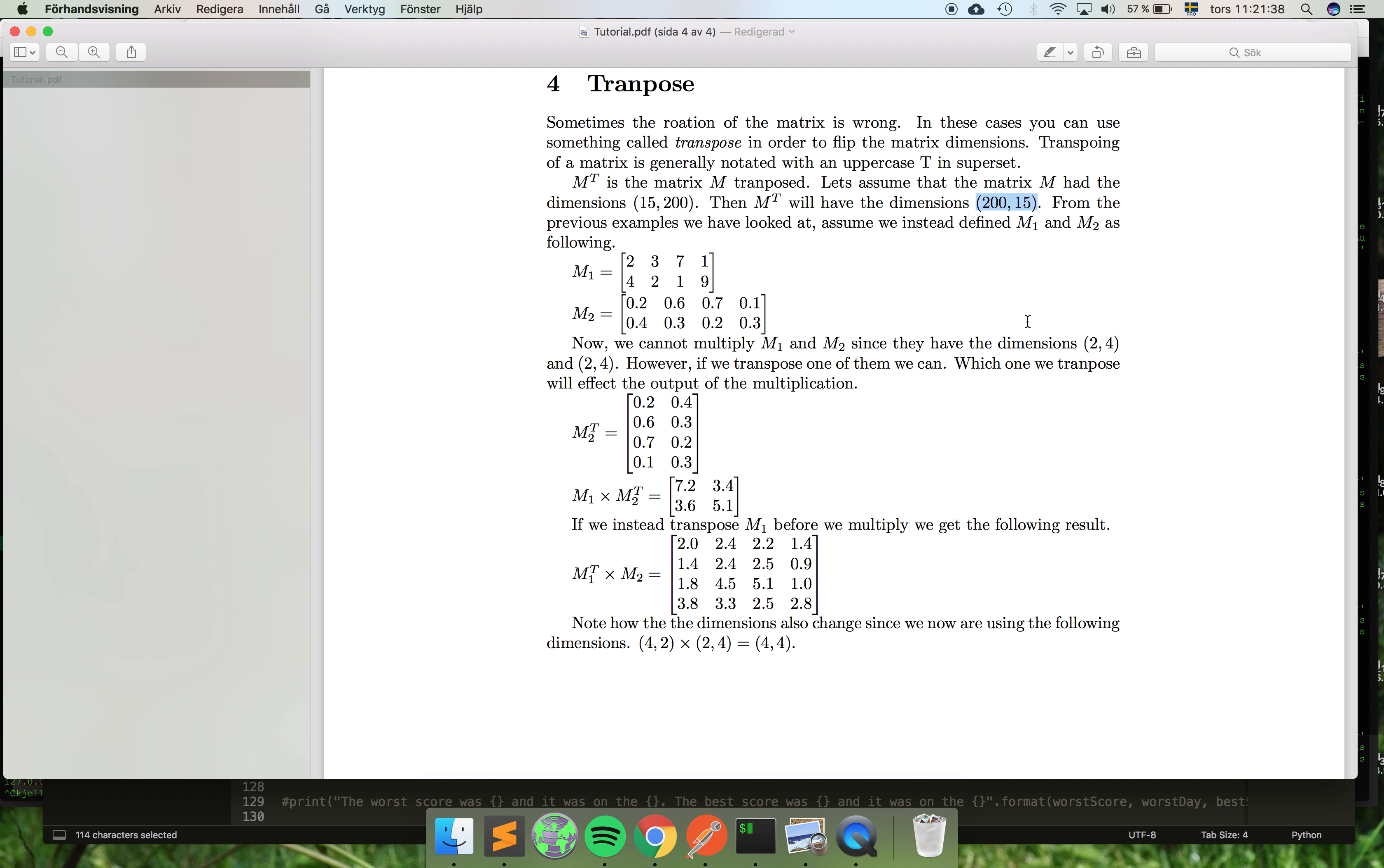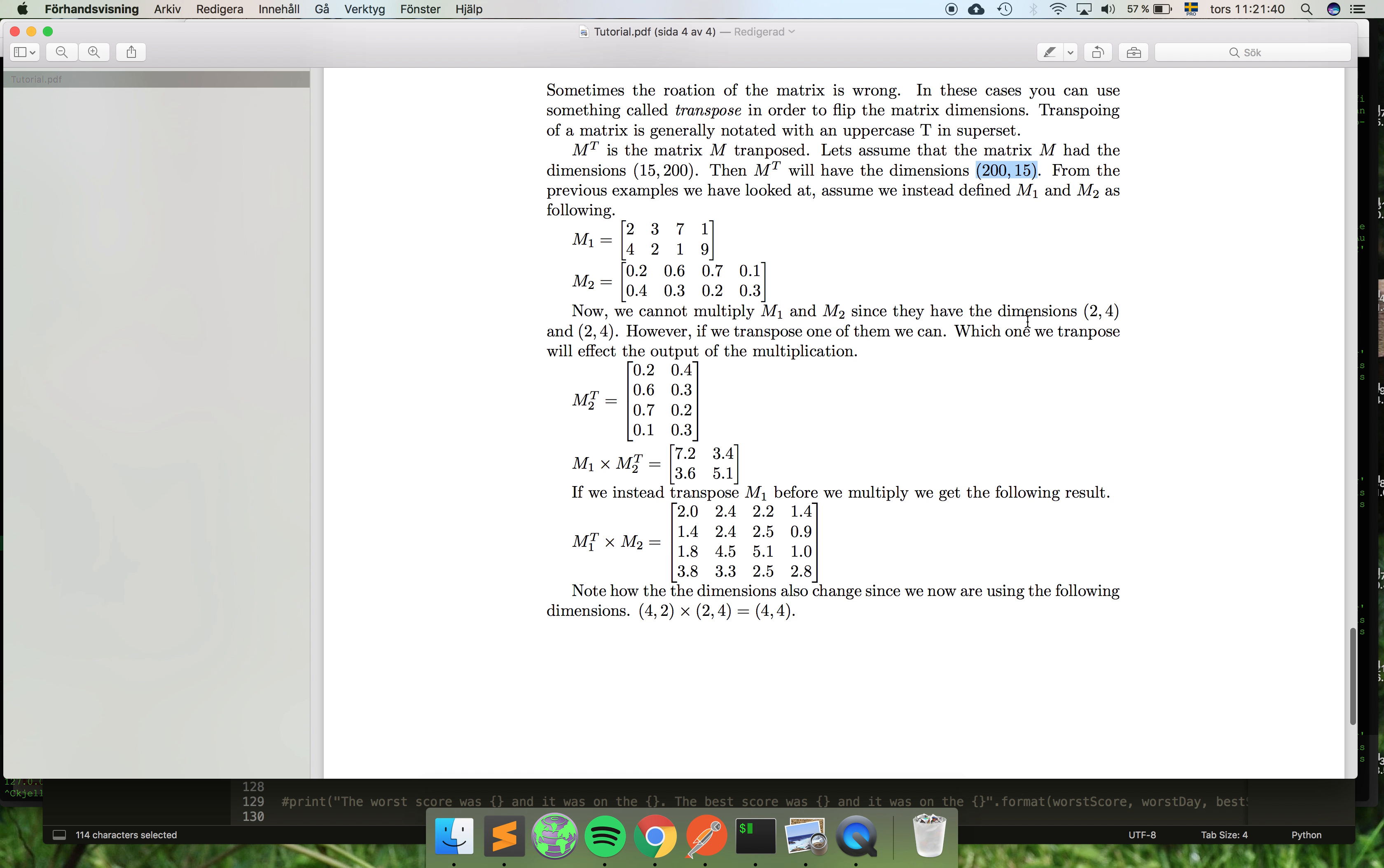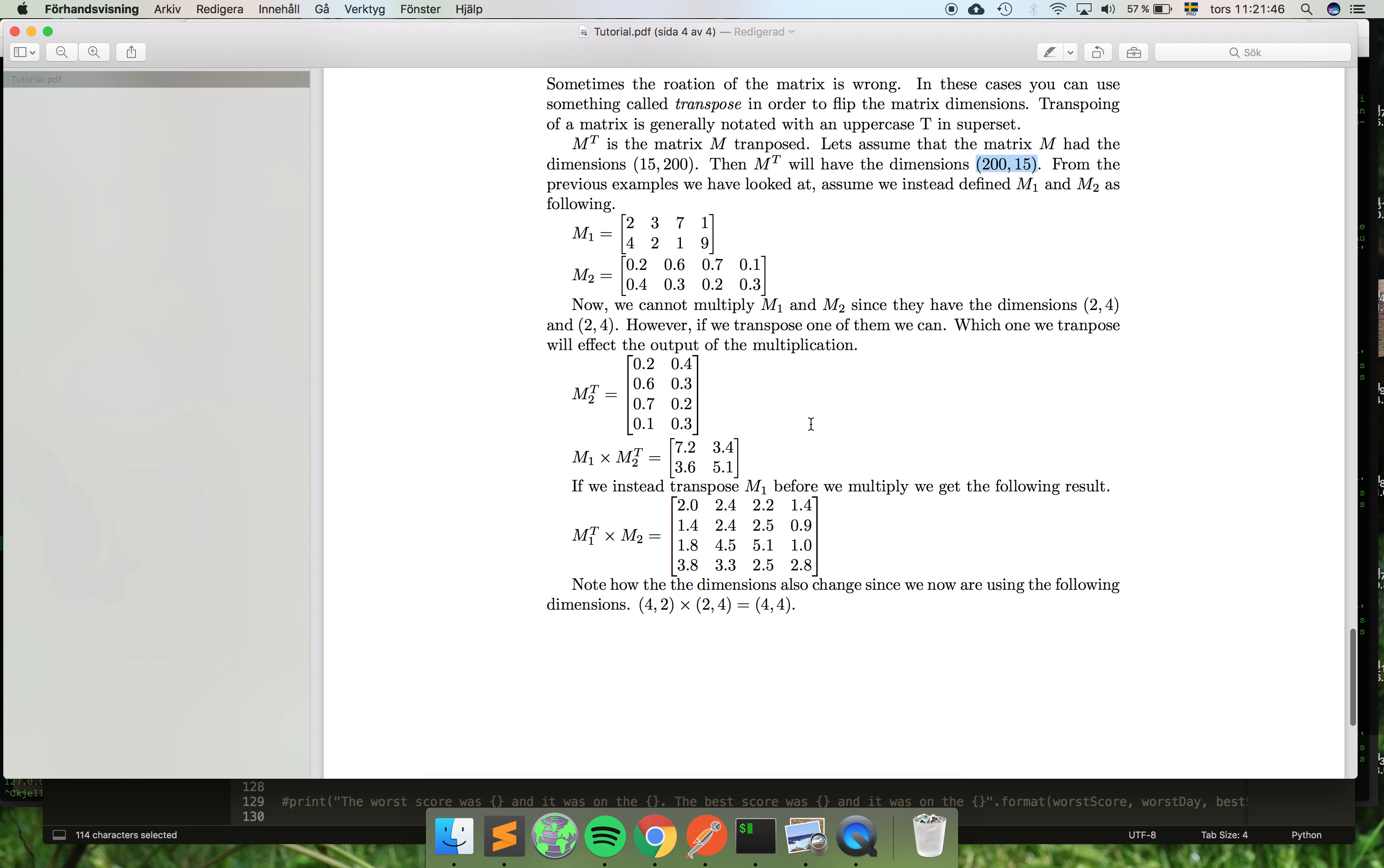And from this example, let's say that we have M1 and M2 here that have these dimensions and these values. You also have 2 by 4 in dimensions, so that won't work when you multiply them because 2 is not equal to 4. Basically the innermost here have to be the same number.